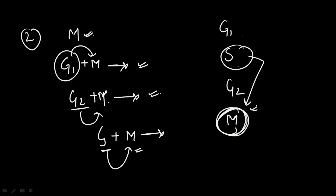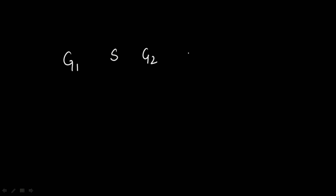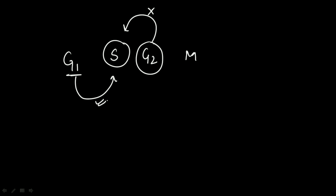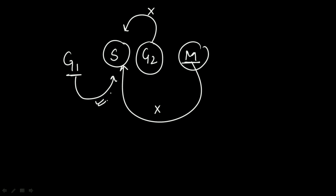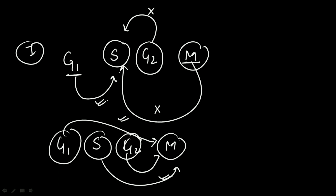To summarize the two conclusions: first, when we mix any cell behind the S phase with an S phase cell, all those cells will enter S phase — but cells that have already passed S phase (G2, M) will not revert back. Second, when we mix any cell — G1, S, or G2 — with an M phase cell, all of those cells will enter the mitotic phase.